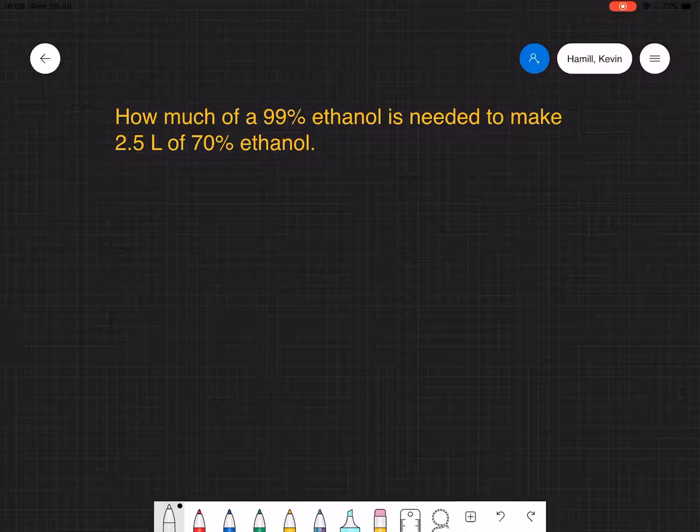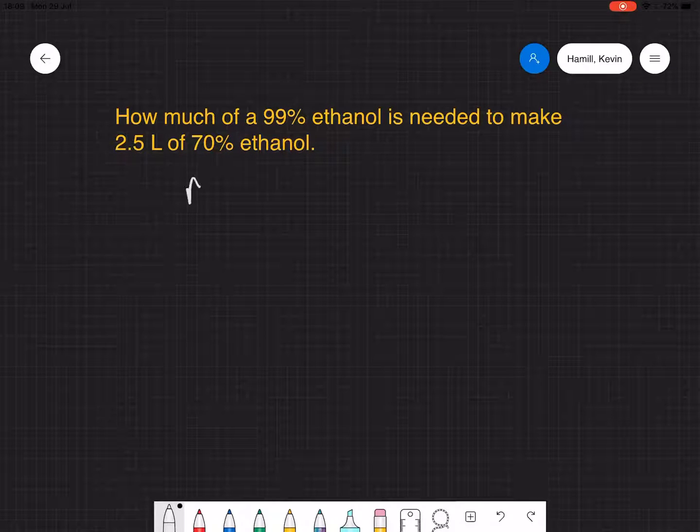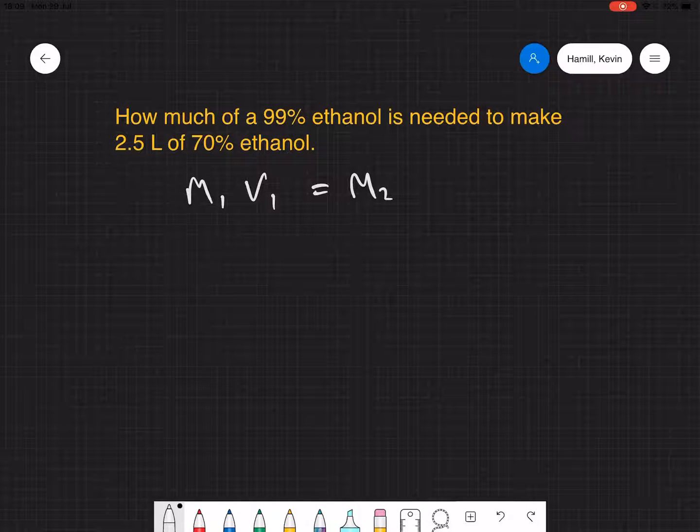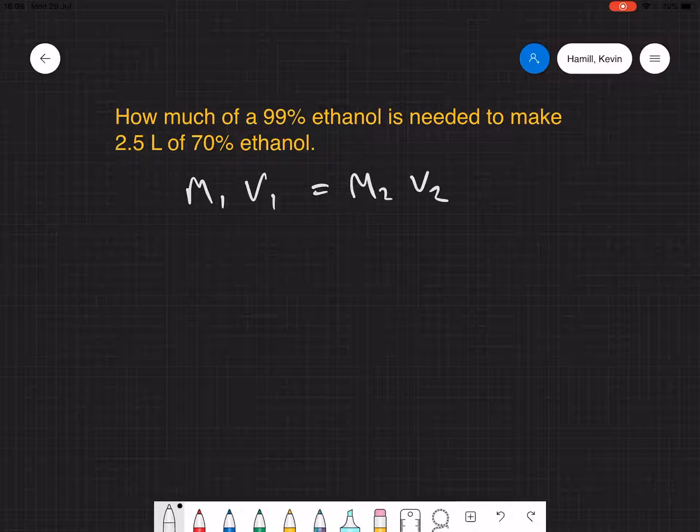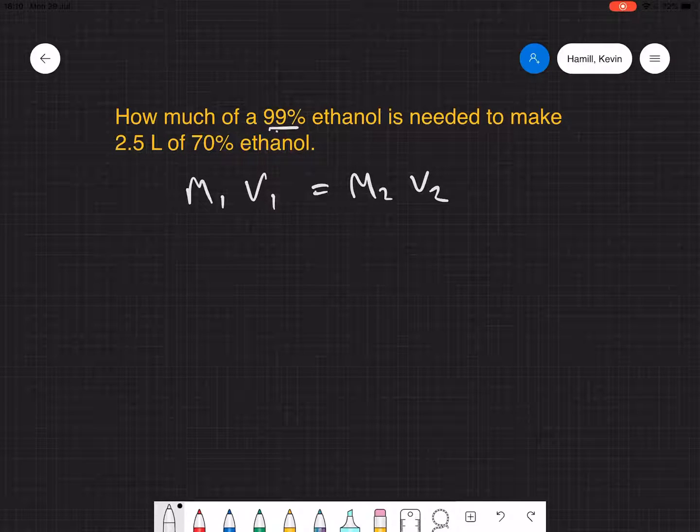So what we need to do here is the same as if we're diluting any other solution. We take molarity one times volume one equals molarity two times volume two. In this case the concentration, the molarity, is actually in percentage.